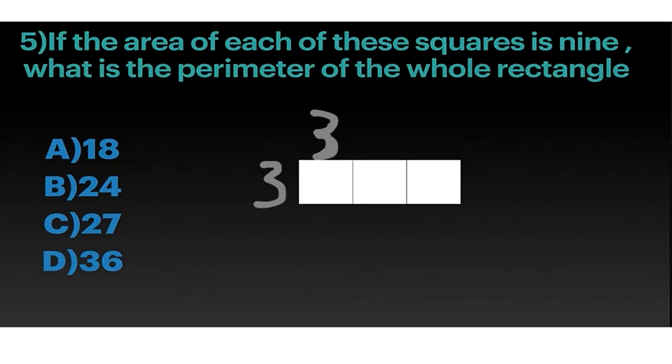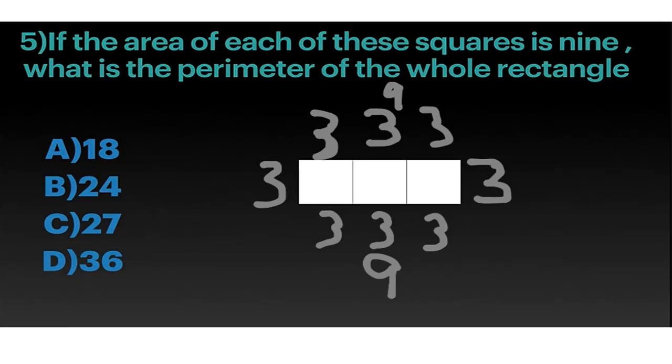If we do 3 times 3, we would get 9. We have to put 3 on the whole entire outside of the thing, because we're trying to find the perimeter and it's the square. It would be 9 for the bottom row, 9 for the top row, and 3 and 3 for both sides. So 9 plus 3 is 12, and another 9 plus 3 is 12. If you add 12 and 12, you would get B, which is 24.